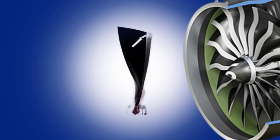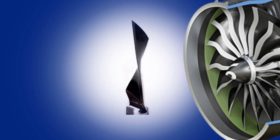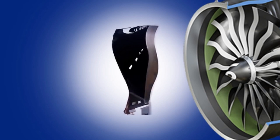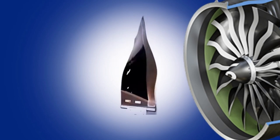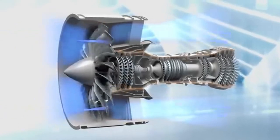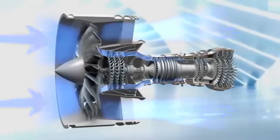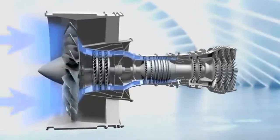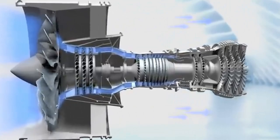For example, the fan blades on the GE9X, one of the largest commercial engines, measure over 11 feet in diameter. Composite fan blades are not just larger but also incorporate sophisticated designs to enhance aerodynamics. The use of materials like carbon fiber composites helps to achieve these larger sizes while maintaining structural integrity.